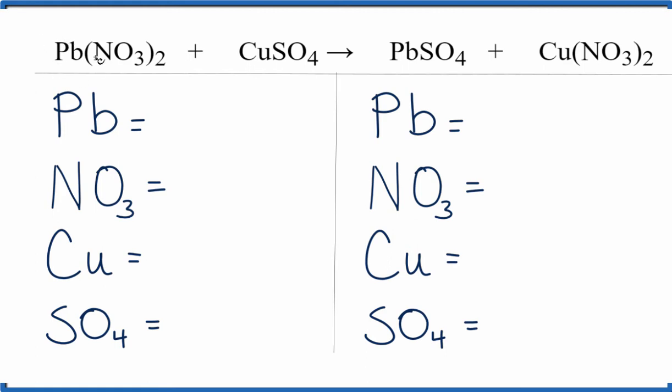On the reactants, we have one lead atom. And then instead of writing the N and the O's separately, I'm just going to call NO3 one item because I've got NO3s over here. So I have one of these and two times everything in there. That gives me two NO3s.